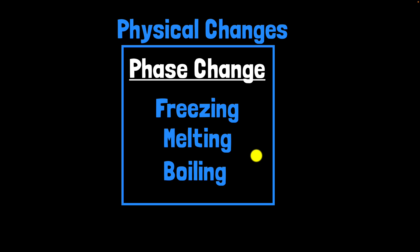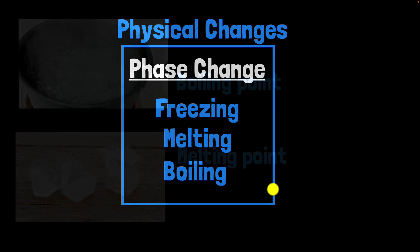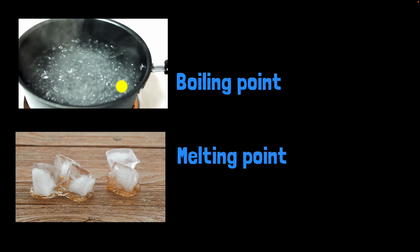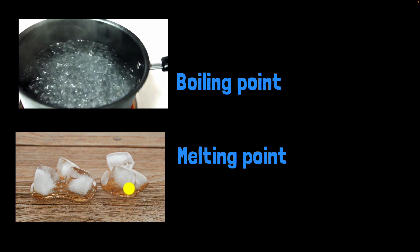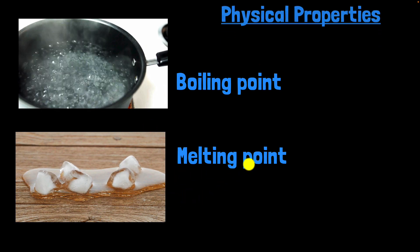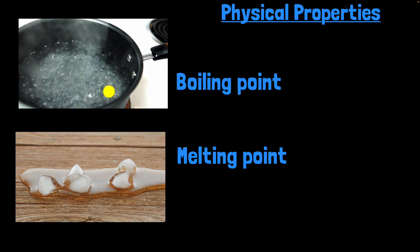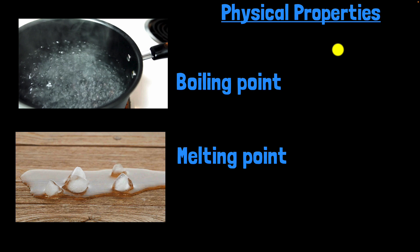This also means we now have some new physical properties added to our list. These are boiling point, the temperature at which a liquid boils, and melting point, a temperature at which a solid melts. These are physical properties because when we are measuring them, the identity does not change. Only the phase changes, but the identity does not change. So these are physical properties.